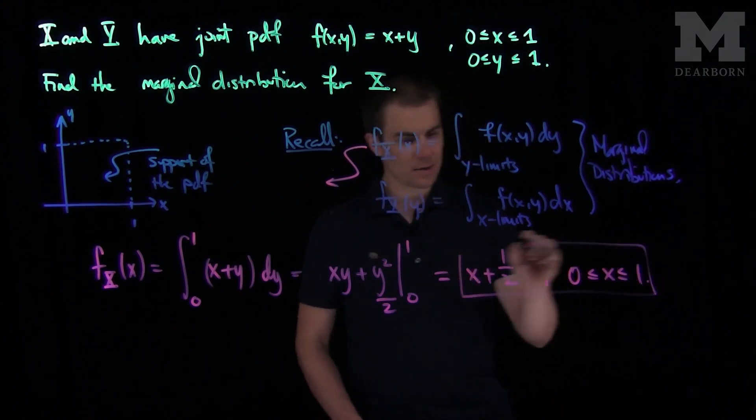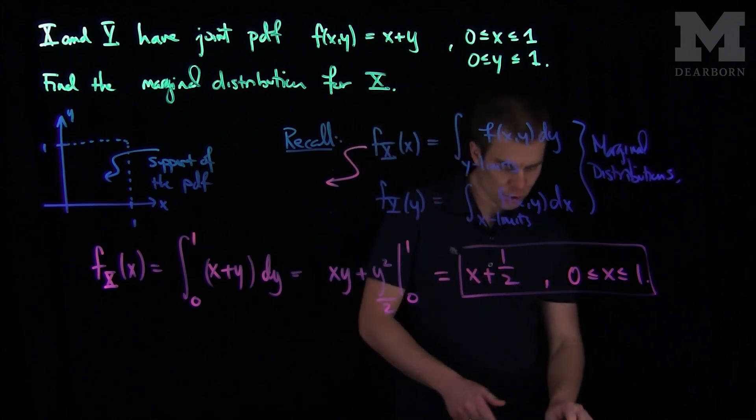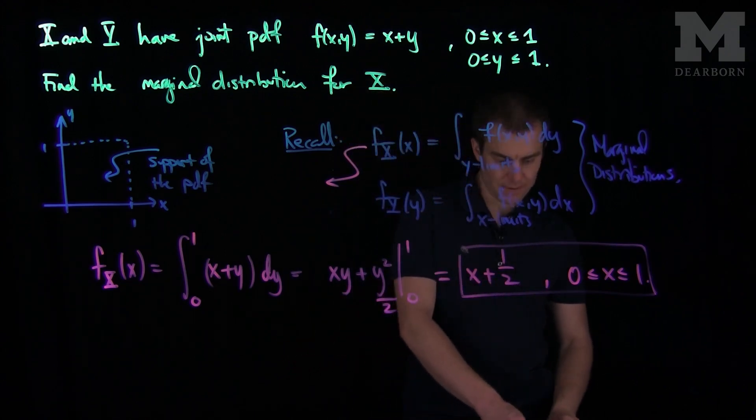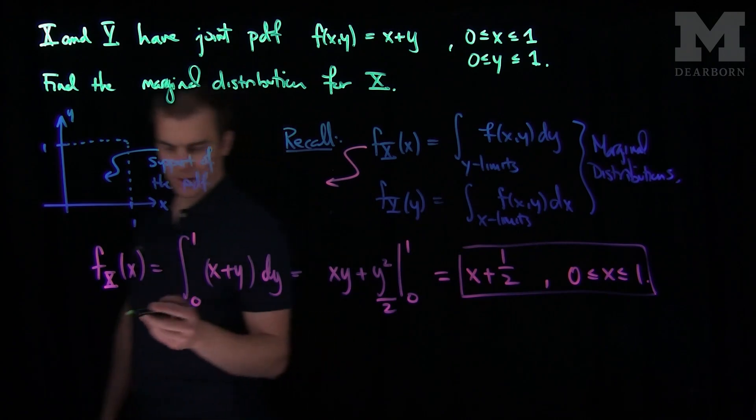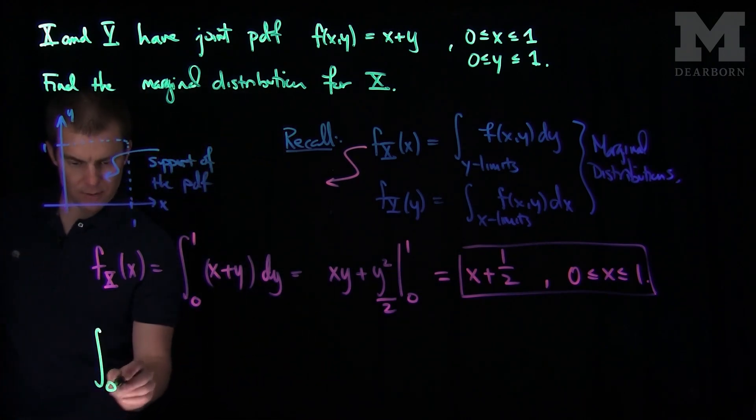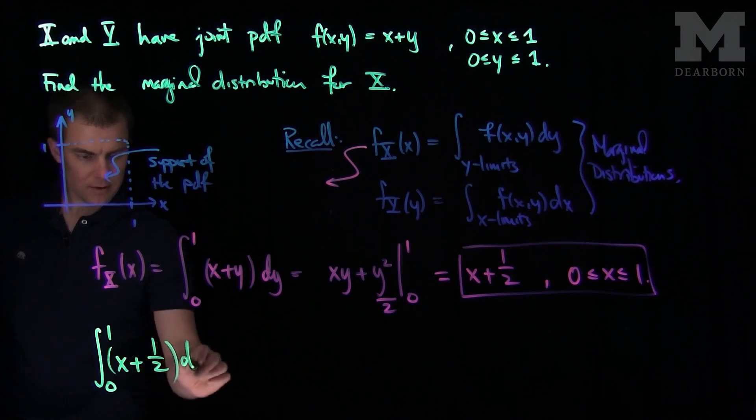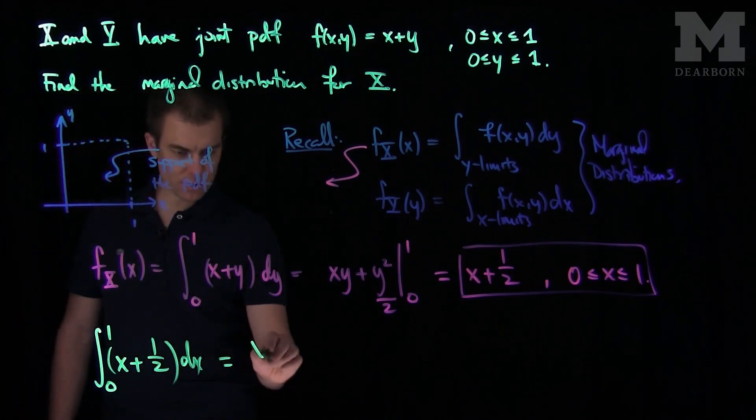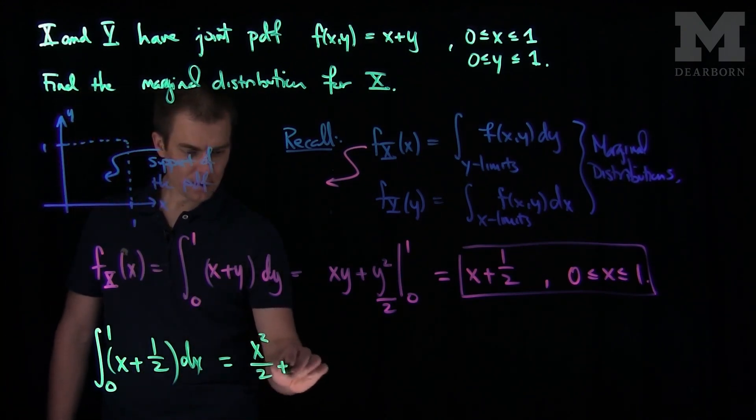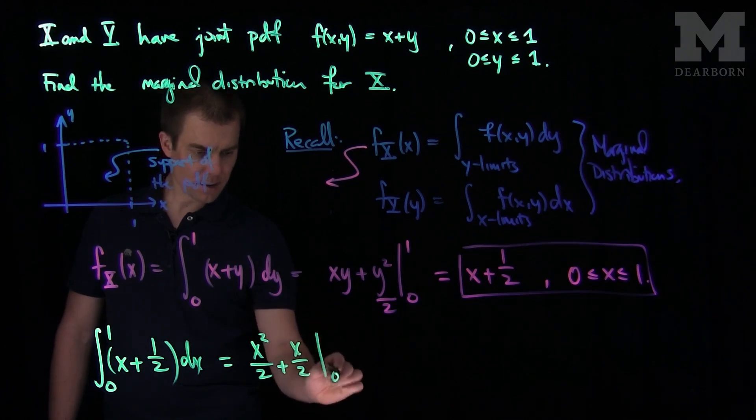We can always check to make sure we do get a valid pdf. To check if this is a valid pdf, we can say the integral from 0 to 1 of x plus 1/2 dx is x squared over 2 plus x over 2, from 0 to 1.